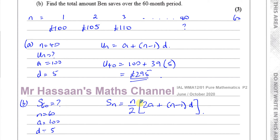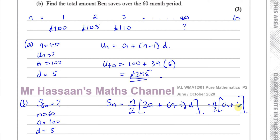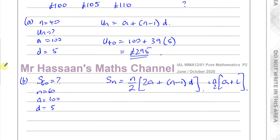There will be an end screen showing my videos on series and sequences, where you can find a video on proving the sum of the first N terms of an arithmetic series. There's another formula as well: N over 2 times A plus L, which is more useful if we know the last term — here the 60th term. We could work out the 60th term and use that formula, but the first formula is easier in this case.